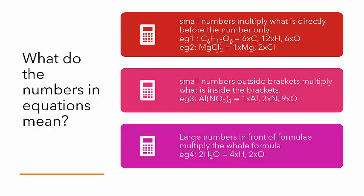When we have brackets in a chemical formula, that tells us that everything inside the brackets is multiplied by the number that is outside the brackets. So aluminium nitrate, for example, tells us that we've got 1 lot of aluminium, 3 lots of nitrogen, and 9 lots of oxygen — so we've got 3 times 3, which is 9 lots of oxygen.